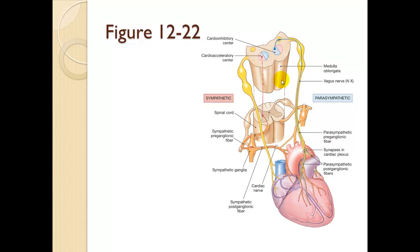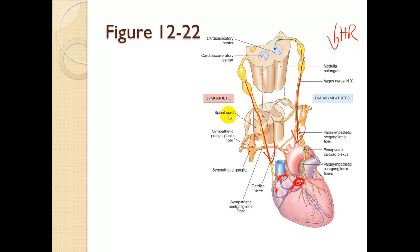In figure 12.22, the sinoatrial node and the atrioventricular node show where sympathetic and parasympathetic innervation occurs. More parasympathetic stimulus decreases heart rate; more sympathetic stimulus increases heart rate.